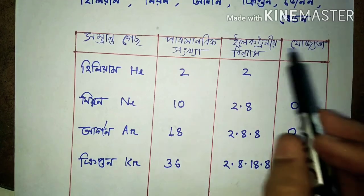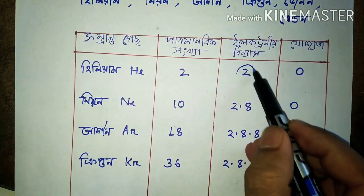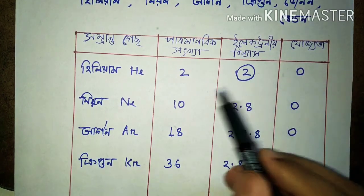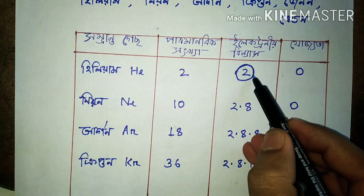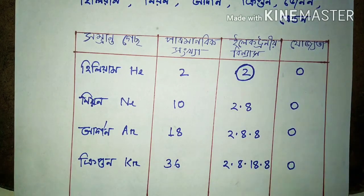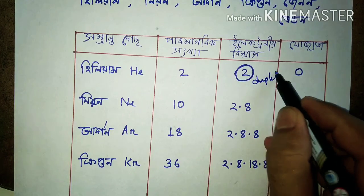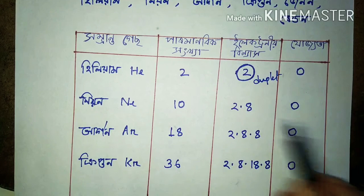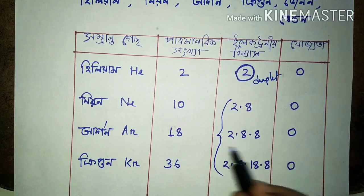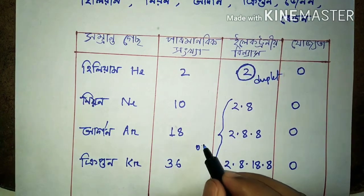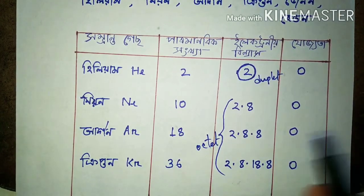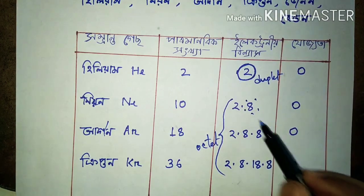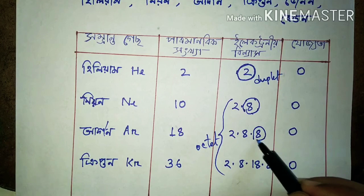With helium, you can find that helium is already a delta electron, and this is a duplet. This is an octet, this is an octet.